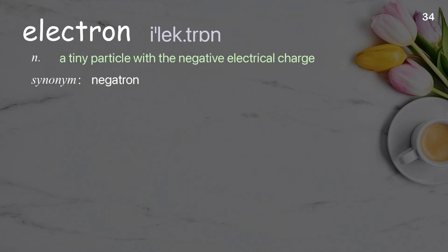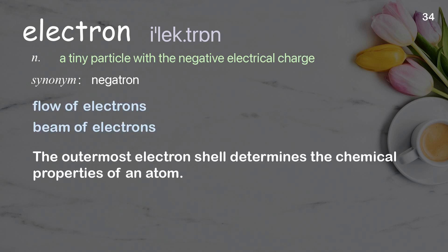Electron: a tiny particle with a negative electrical charge. Examples: flow of electrons, beam of electrons. The outermost electron shell determines the chemical properties of an atom.